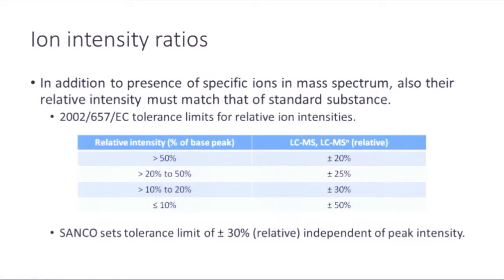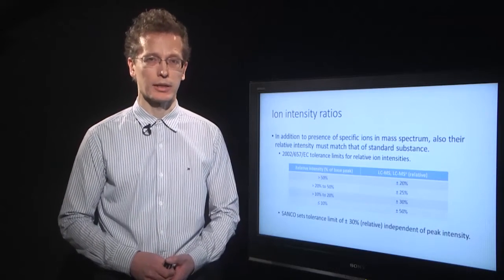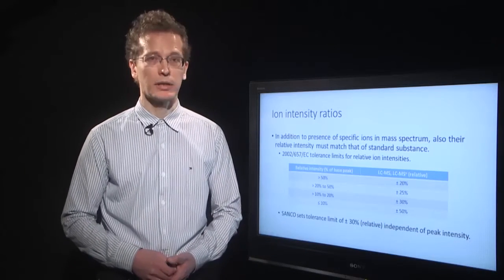For example, if the relative intensity of the peak in the mass spectrum is 40 percent, then we look at the second line in the table. The required tolerance in the analyzed spectrum is plus or minus 25 percent. So 25 percent of 40 is 10, and therefore the range of acceptable relative intensities in the analyzed mass spectrum is from 30 to 50 percent. The SANCO validation guide also sets similar limits in a similar manner, but all the tolerances are the same — plus or minus 30 percent — regardless of the peak intensity in the mass spectrum.